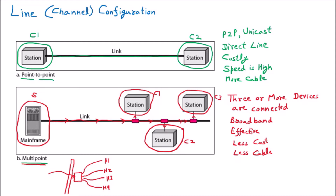Just like point-to-point communication is called unicast, multi-point communication has two categories: multicast and broadcast. The meaning of both involves sending from one to many. There can be confusion about these two, but I'll use examples to clarify. In multicast, we know the example of a meeting — sending data to specific people who are interested in the communication.